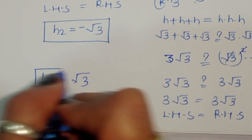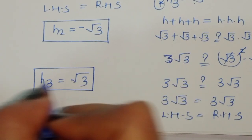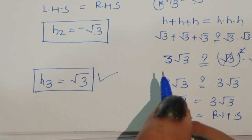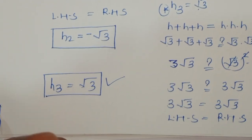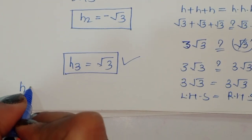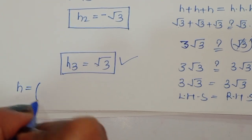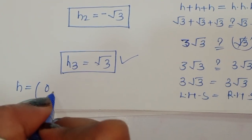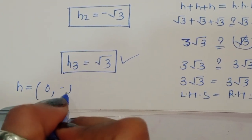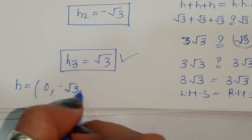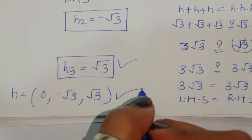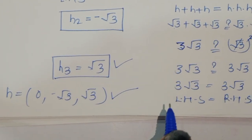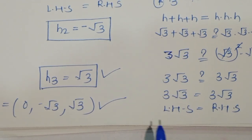So h equals square root of 3 is also a correct solution. In total, we found three values: h equals 0, h equals negative square root of 3, and h equals square root of 3. These are all the solutions for this equation. Thank you.